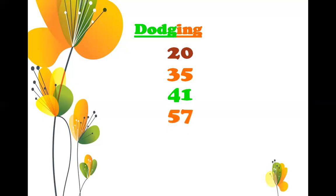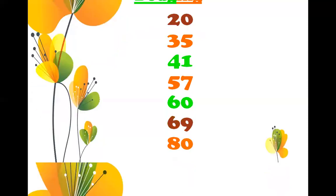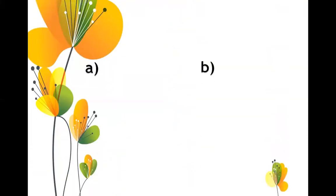Write 57. After that write 60, you have to write 60. Then write 69, you have to write 69. After that write 80, you have to write 80. So this is dodging.